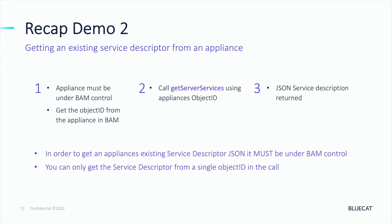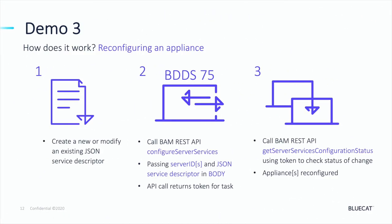A quick recap of Demo 2: we've shown how, once under BAM control, we can use the Get Server Services API call by passing the object ID to get the currently applied JSON service descriptor for our appliance. This call can only be used against a single appliance at a time, not multiple appliances.